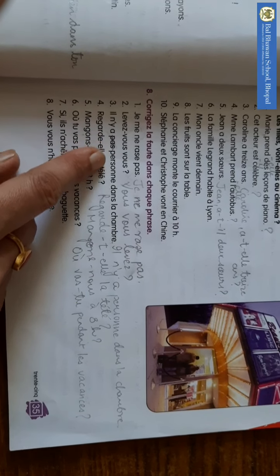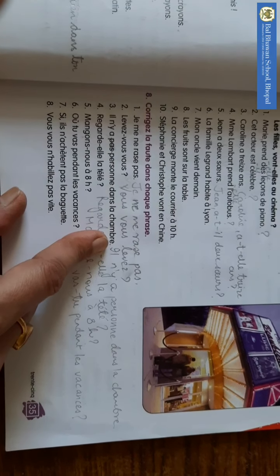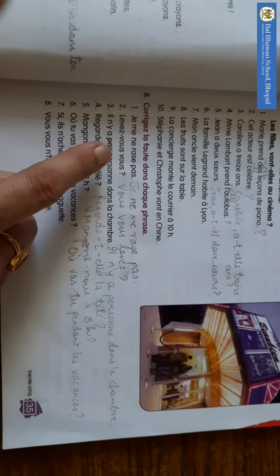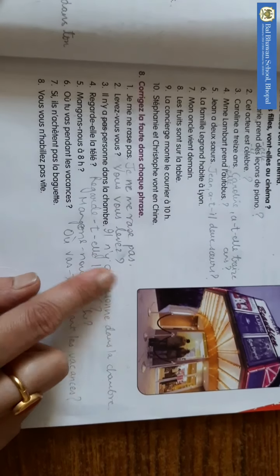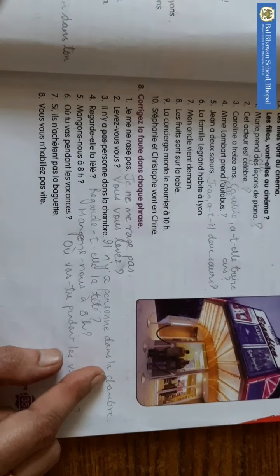Now, il nia pa, person, da, la, chambre. So with person, pa will not come. So the answer will be, il nia, person, da, la, chambre.